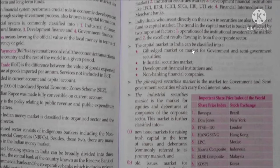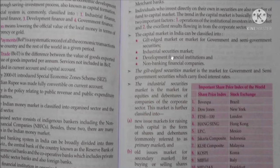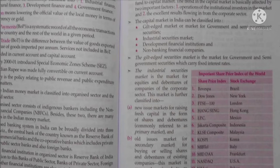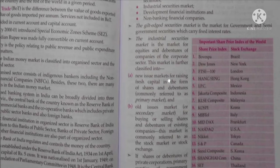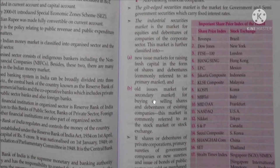The capital market in India can be classified into: first, the gilt-edged market, or market for government and semi-government securities; second, the industrial securities market; third, development financial institutions; and fourth, non-banking financial companies. The gilt-edged securities market is the market for government and semi-government securities which carry fixed interest rates. The industrial securities market is the market for equities and debentures of companies in the corporate sector, further classified into a new issues market — raising fresh capital in shares and debentures, commonly referred to as the primary market.